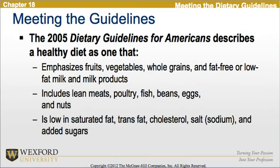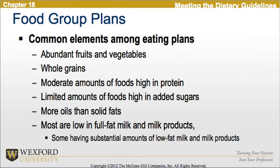The 2005 Dietary Guidelines for Americans describes a healthy diet as one emphasizing fruits, vegetables, whole grains, and fat-free or low-fat milk and milk products, including lean meats, poultry, fish, beans, eggs, and nuts, and low in saturated fat, trans-fat, cholesterol, salt, and added sugars. Common elements among eating plans include abundant fruits and vegetables, whole grains, moderate amounts of protein-rich foods, limited added sugars, more oils than solid fats, and generally low in full-fat dairy.